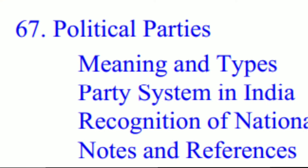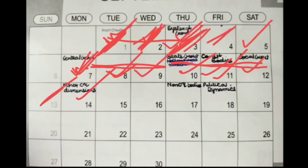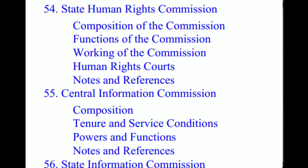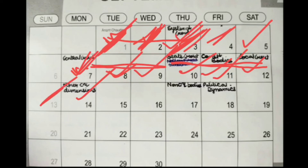On day fifteen, you do chapter 67 — Political Parties — and then jump back to the non-constitutional bodies. You cover National Human Rights Commission and State Human Rights Commission by comparing them, then Central Information Commission and State Information Commission by comparing them. So you're done with four chapters there and chapter 67, giving you an edge in non-constitutional bodies.